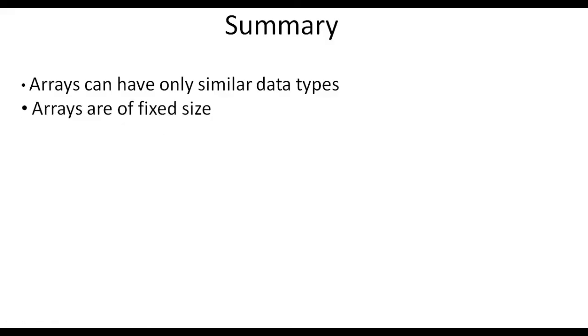So let's summarize this once. Arrays are collection of similar things, so they can have only similar data types. You cannot have characters in integer array or vice versa or any other type in the integer array. Arrays are of fixed size, and if you have defined a size of any array as 5, you cannot add the sixth element in it.